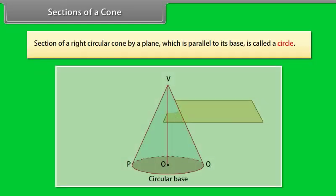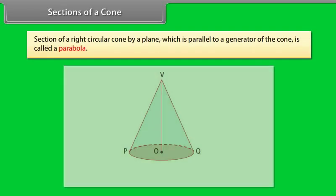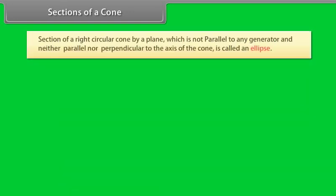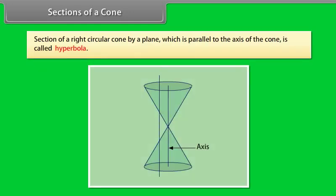We will discuss various sections of a right circular cone. A section of a right circular cone by a plane which is parallel to its base is called a circle. A section by a plane which is parallel to a generator of the cone is called a parabola. A section of a right circular cone is called an ellipse. A section by a plane which is parallel to the axis of the cone is called a hyperbola.